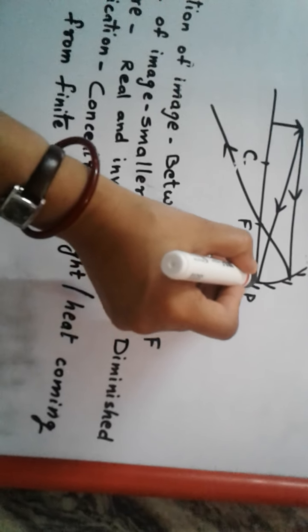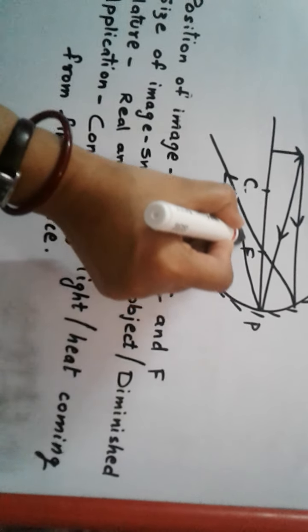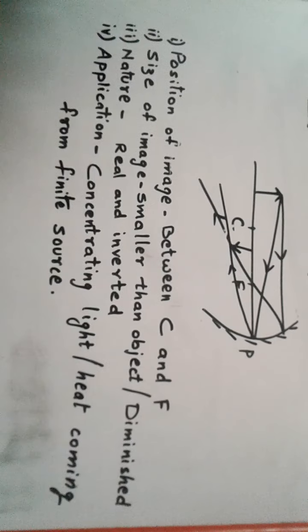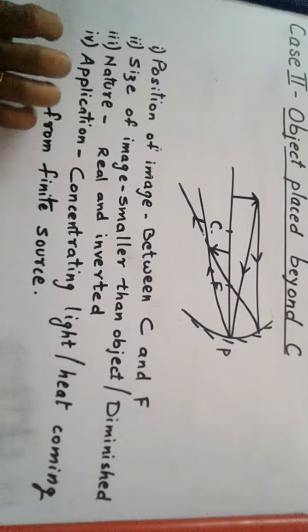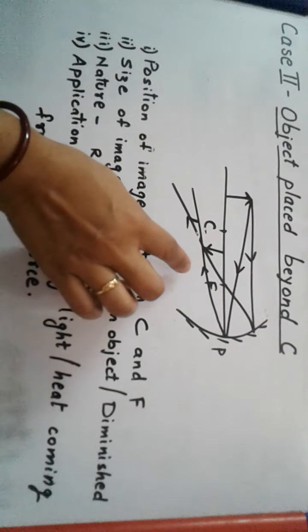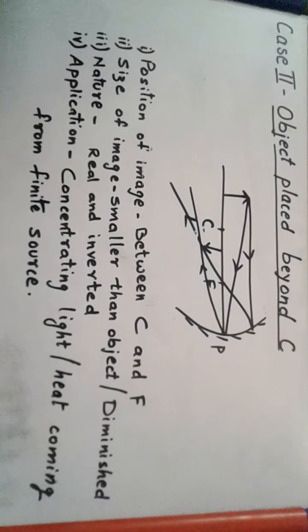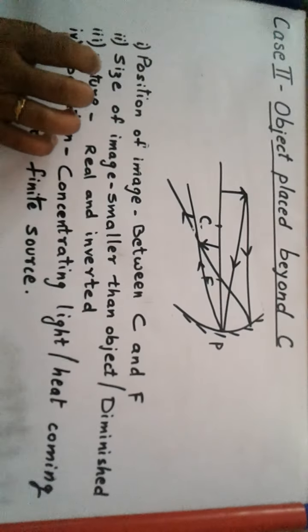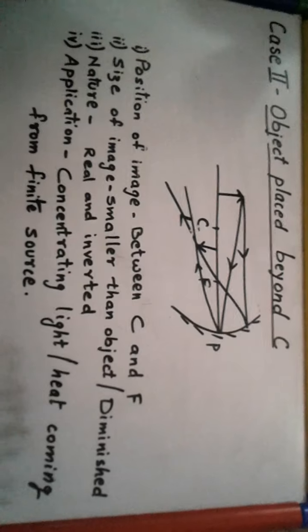This is an oblique ray coming toward the pole, and after reflection from here it will pass obliquely. Again, both rays will intersect between C and F. The lines may not be straight here, but when you do it with your scale and pencil, you will find that the lines are straight and the image forms exactly between C and F.